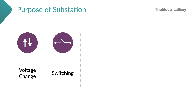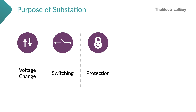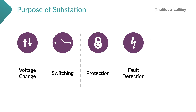The second purpose is switching. There are multiple times when we need to switch the supply on or off, and that can be done using a substation. The third purpose is protection — whenever there is a fault, circuit breakers installed in the substation operate and protect the circuit and the complete power system. Related to this is fault detection: relays provided in the substation detect a fault, send a signal to the circuit breaker, and the circuit breaker operates, thereby protecting our system.